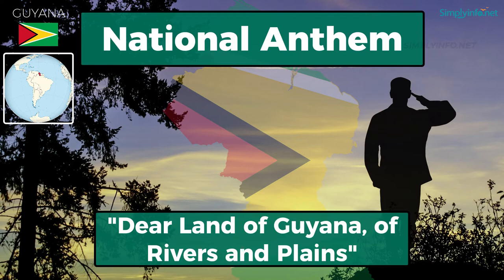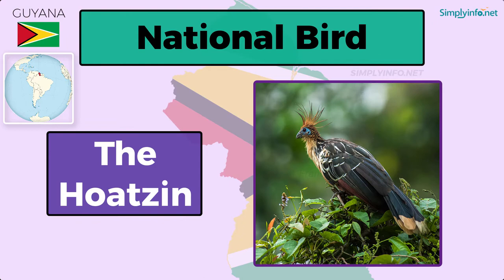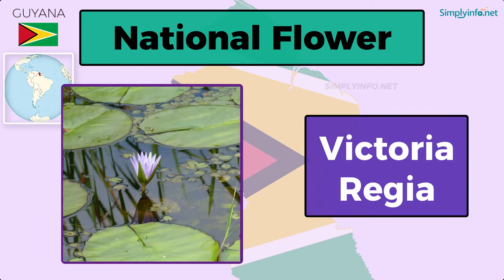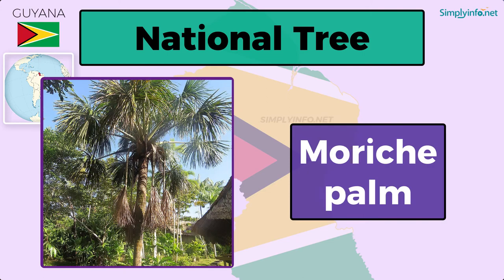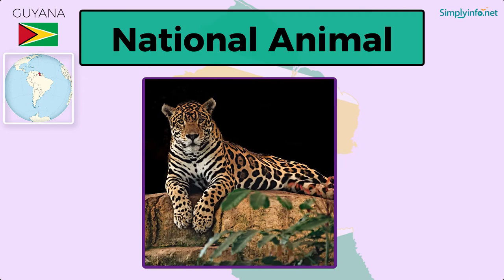National Bird: The Hoatzin. National Flower: Victoria Regia. National Fruit: Dragon Fruit. National Tree: The Morici Palm. National Animal: Jaguar. National Sport: Cricket.